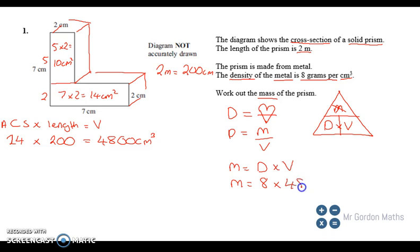That's our volume in centimeters cubed. And then we can work out the mass. So 8 lots of that is going to be 38,400.